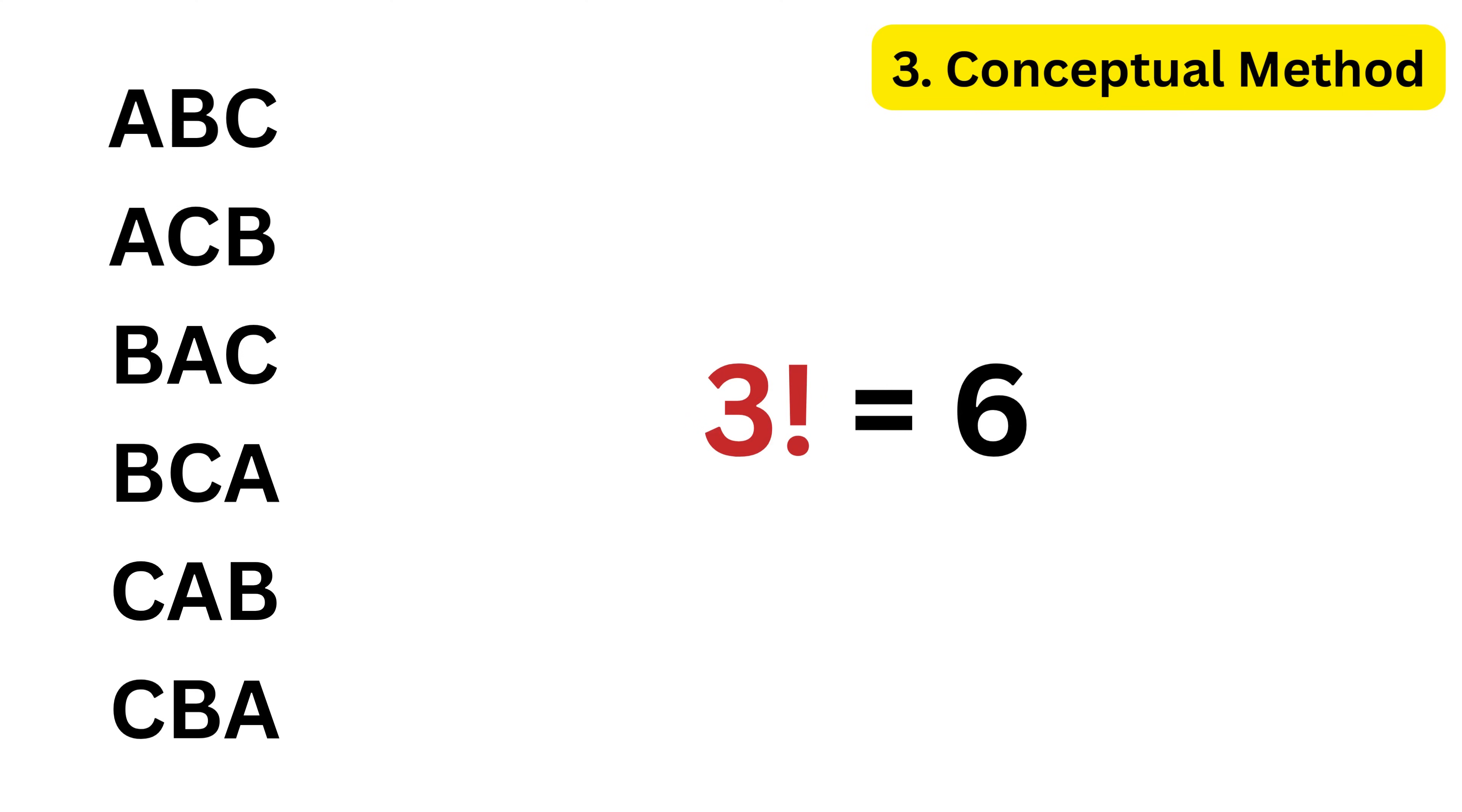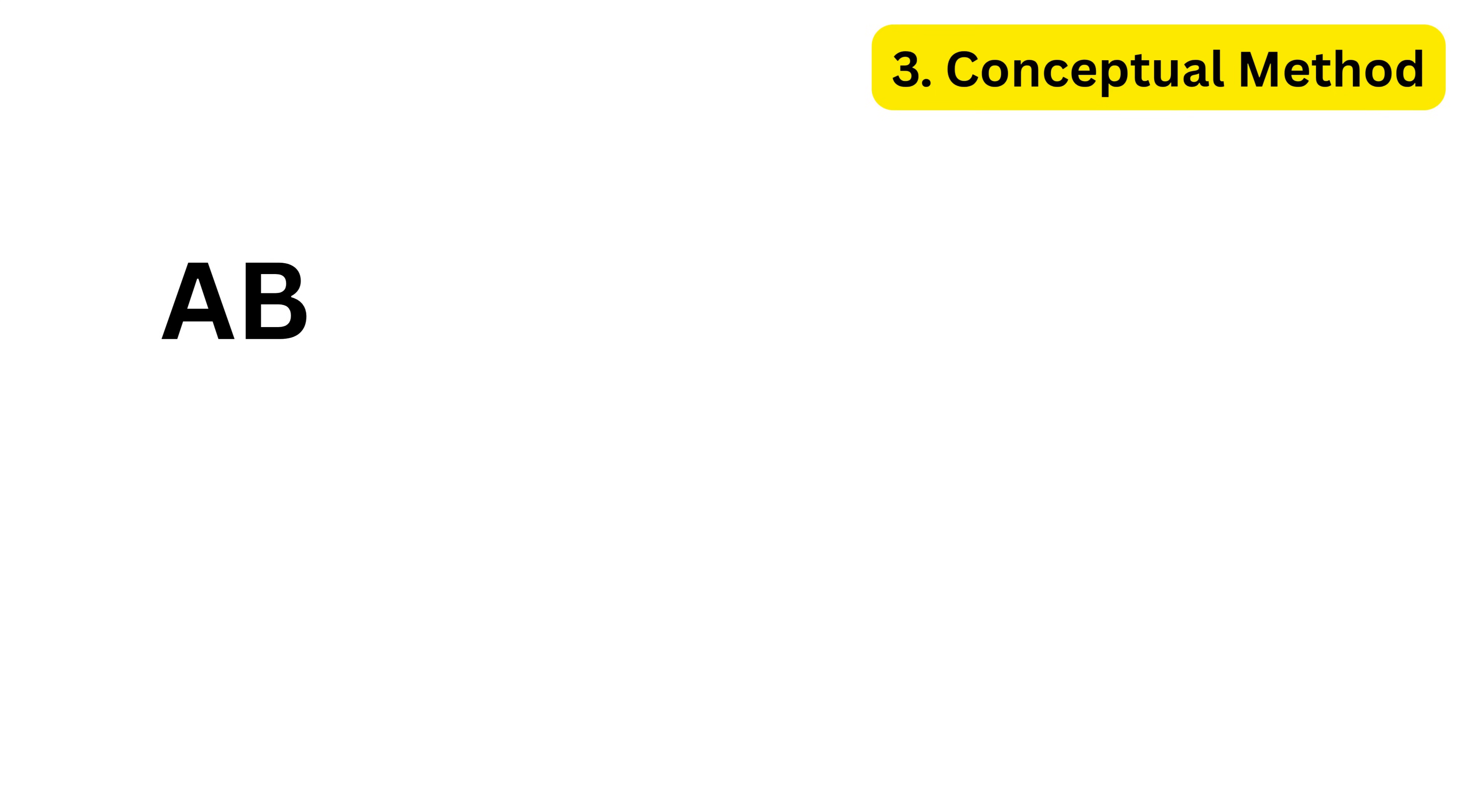For example, if we have three different letters A, B, C, then we can arrange them in six different ways like this. That's why 3 factorial is 6. If we have two letters A, B, we can arrange them in two different ways like this. So 2 factorial is 2. And if we have one letter A, there's only one way to arrange it. So 1 factorial is 1.